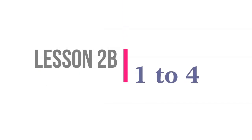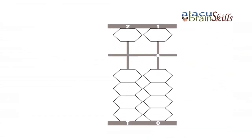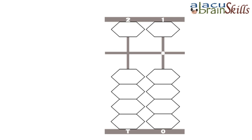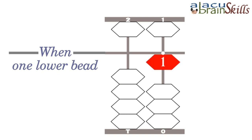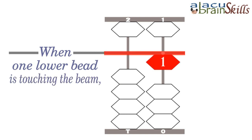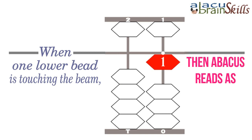Lesson 2B. When one lower bead is touching the beam, then the Abacus reads as 1.